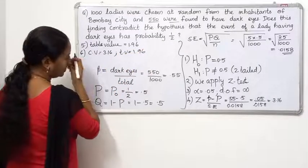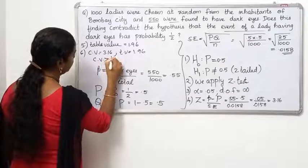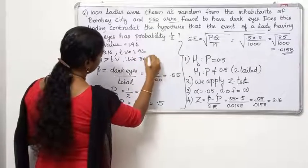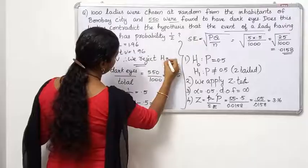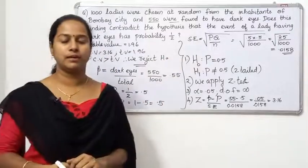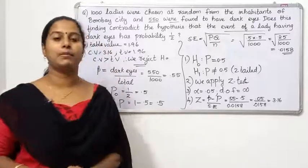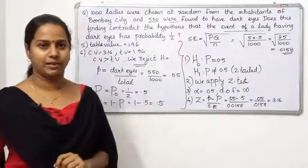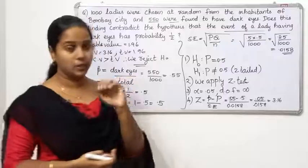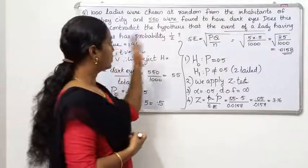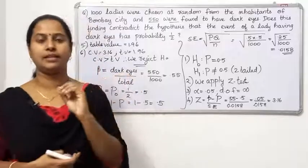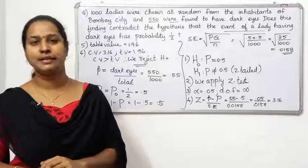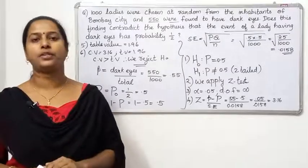The calculated value is greater than the table value. Therefore, we reject the null hypothesis that the probability of a lady having dark eyes is 1 by 2. The hypothesis is rejected.